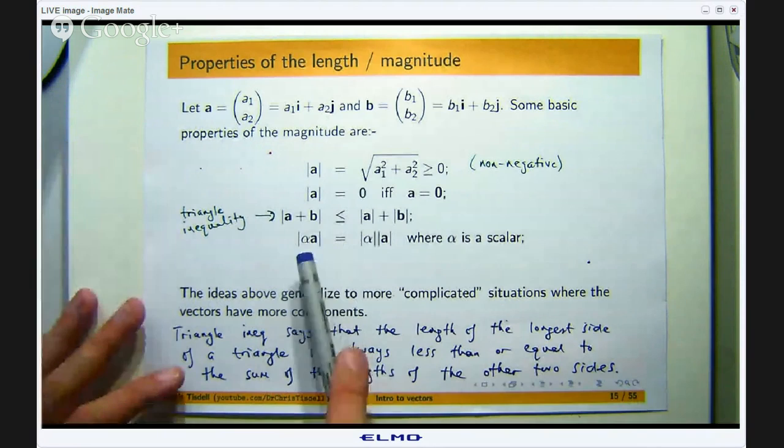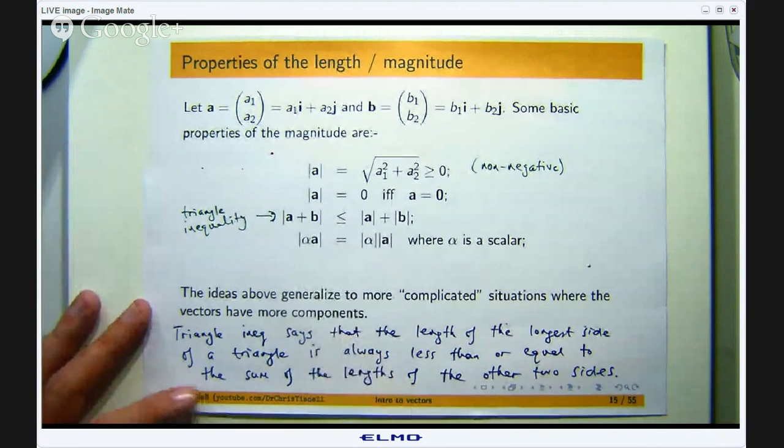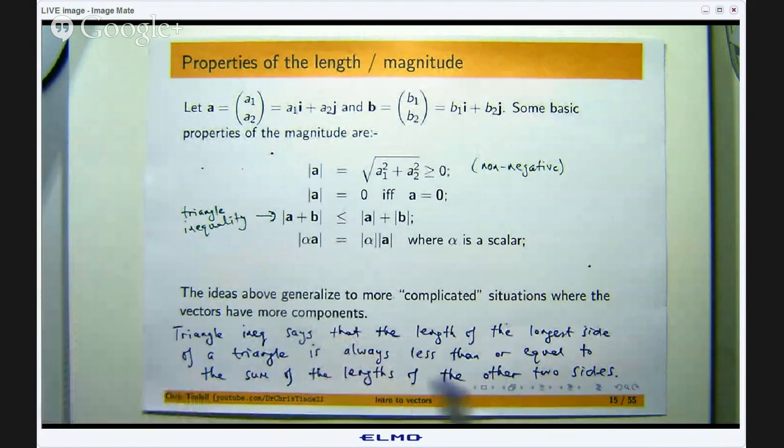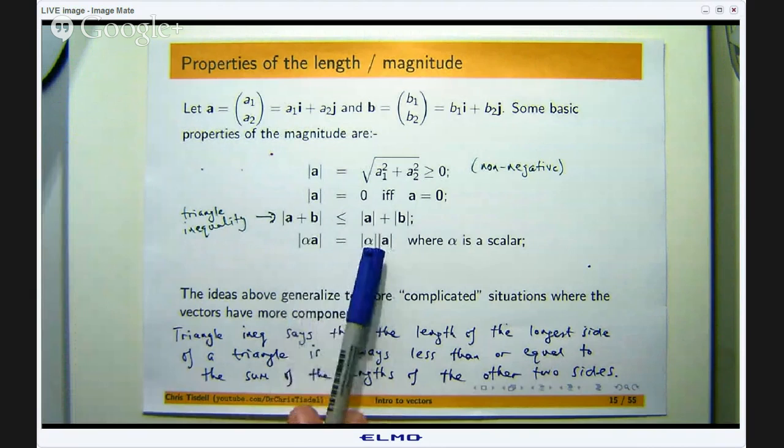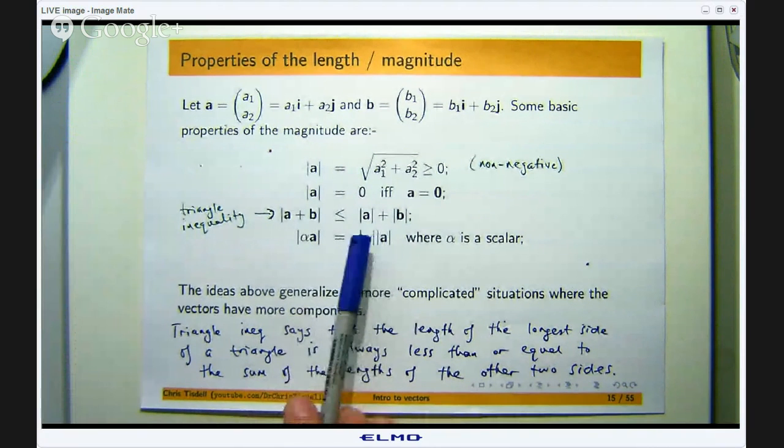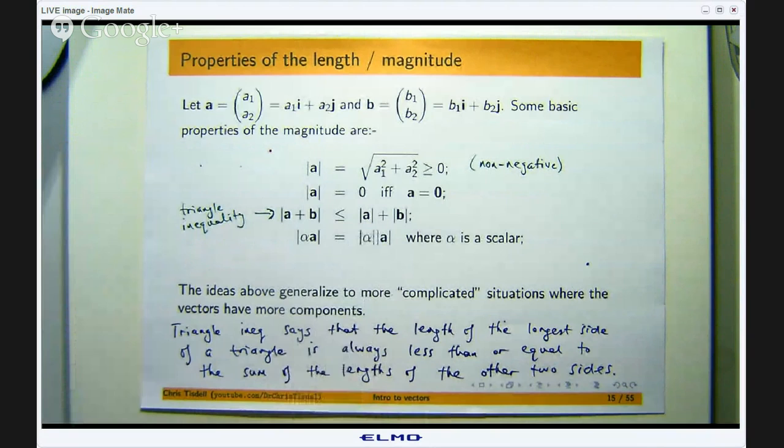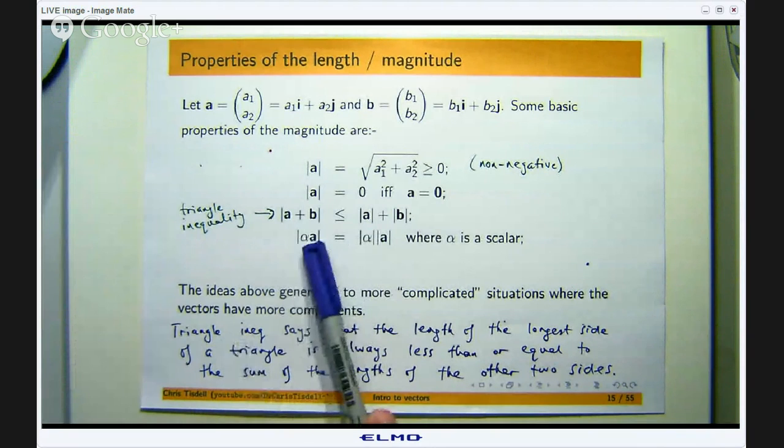And lastly, if I have a vector and I multiply it by a number, say 2, and I want to look at the magnitude or the length of that, then really it is just the product of that scalar, the absolute value of that scalar times the length of the vector. So if this was 2a, I would just basically take the absolute value of 2 which is 2 and just multiply by the length of the vector a.